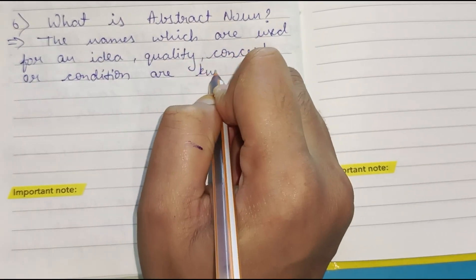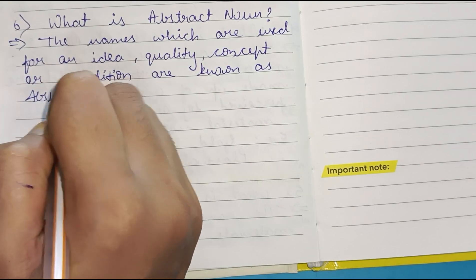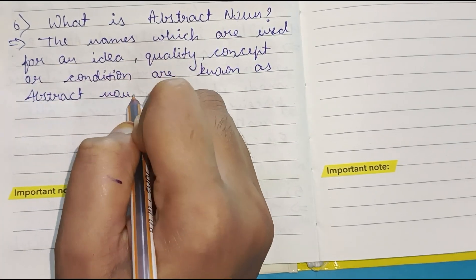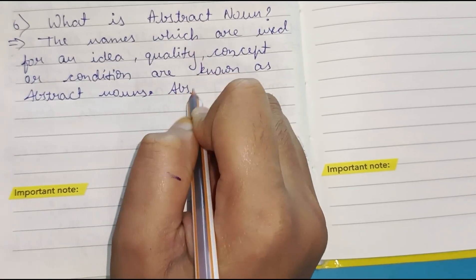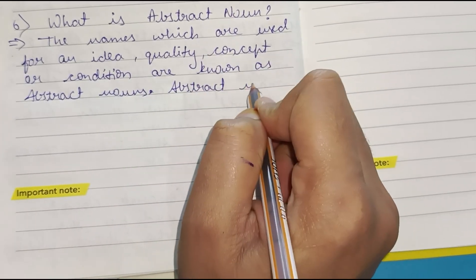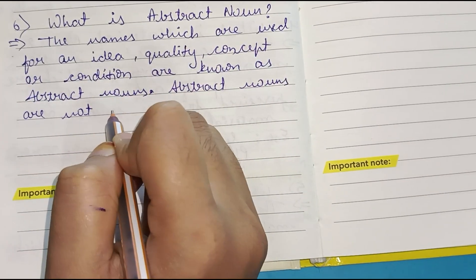What is abstract noun? The names which are used for an idea, quality, concept or condition are known as abstract nouns.